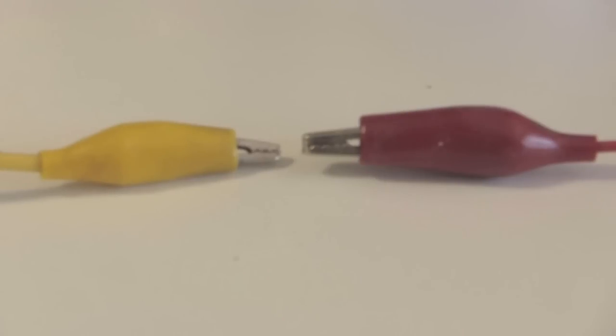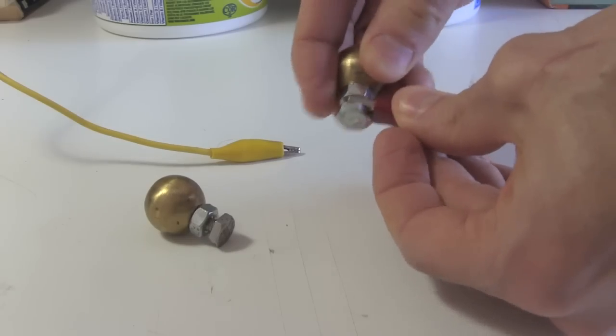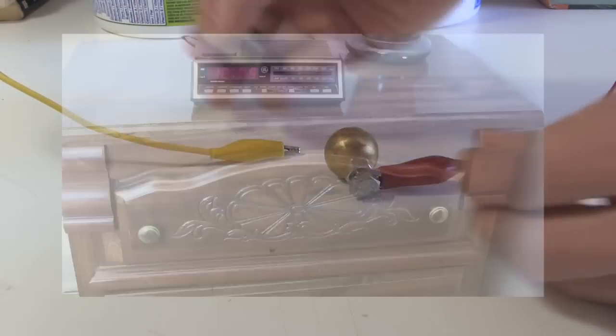The rounder the parts of the spark gap are that face each other, the better it'll work. Here I'm using two alligator clips, which isn't that good since they have sharp teeth. Here I'm using two brass balls, which is as good as you can possibly do. You can get things like these at hardware stores like Home Depot. Look for roundish metal drawer handles.